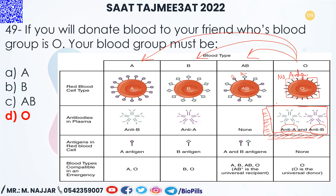Blood group B has antigen B on the surface of the red blood cell, and if it donates to O, it will coagulate with the antibody B present in the plasma of the receiver, which is blood group O.